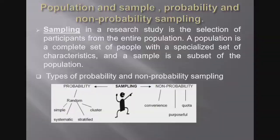Sampling can be probability sampling or non-probability sampling. Probability sampling includes simple random sampling, systematic random sampling, stratified random sampling, and cluster random sampling. Non-probability sampling includes convenience sampling, quota non-probability sampling, and purposeful non-probability sampling. Read about what each of these sampling methods means.